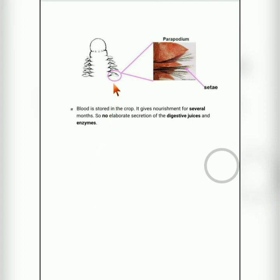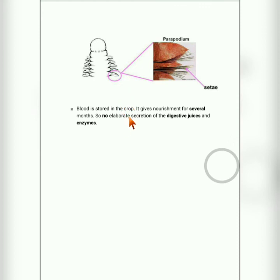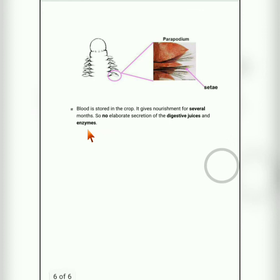Fifth, parapodia and setae are completely absent in leech. These are locomotory organs found in other annelids — parapodia are fleshy outgrowths and setae are bristle-like structures. Leech moves by contraction of muscles instead. Sixth, blood is stored in the crop chambers of the digestive system, and it takes several months for digestion — a leech can survive nearly one year on a single blood meal. No elaborate digestive juices or enzymes are required.